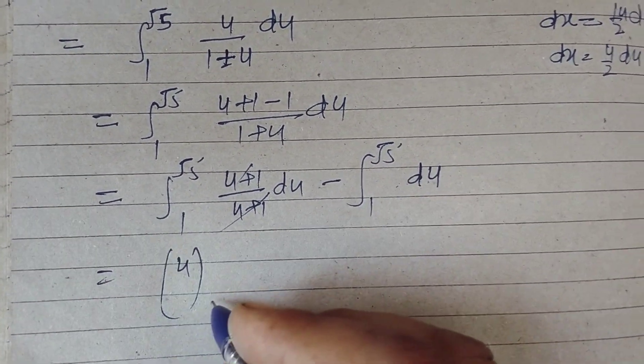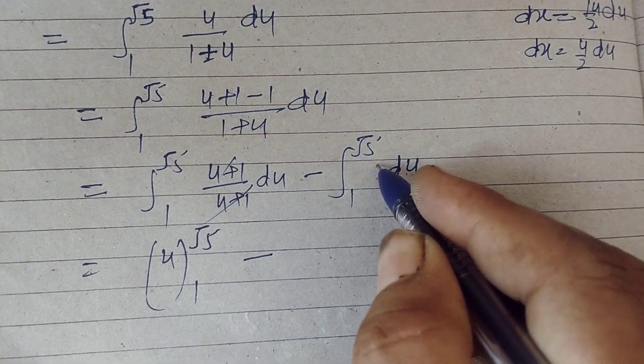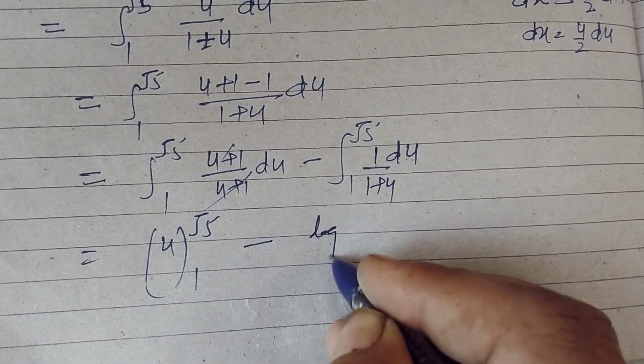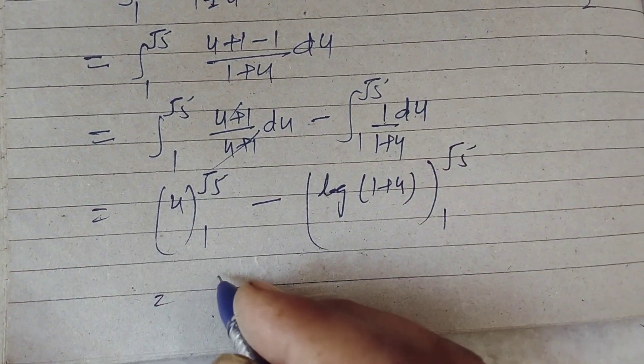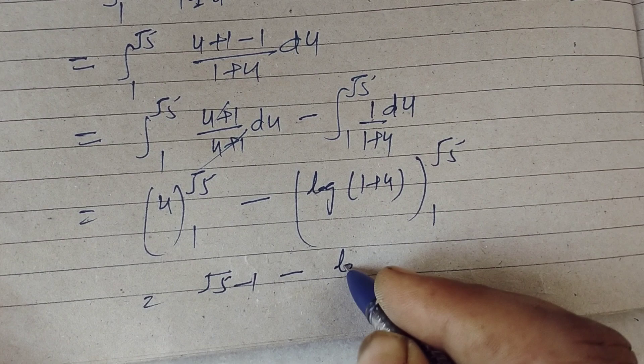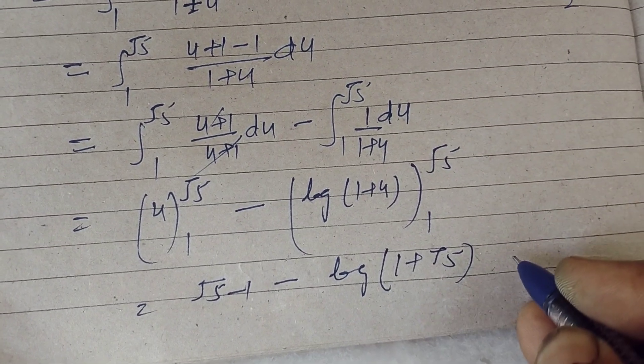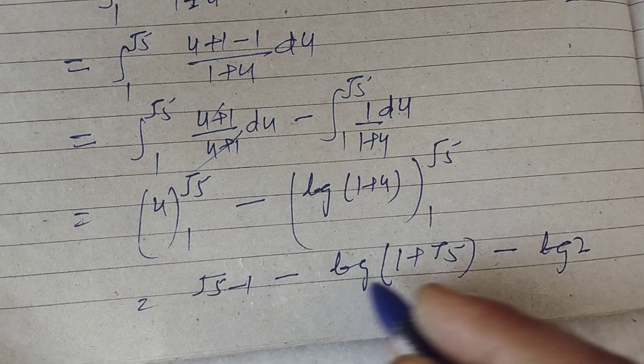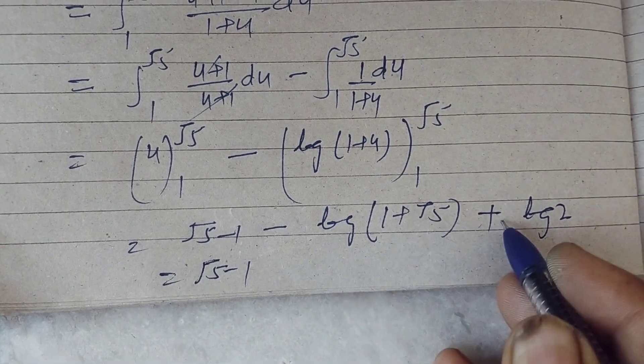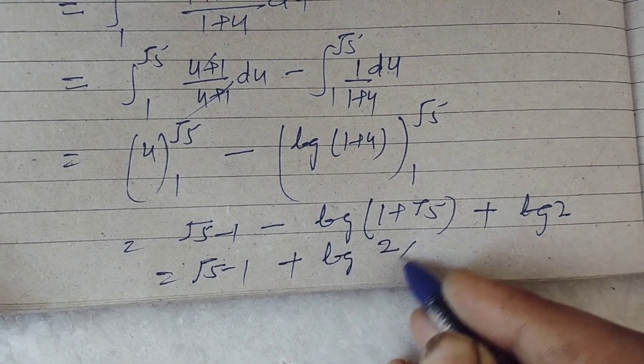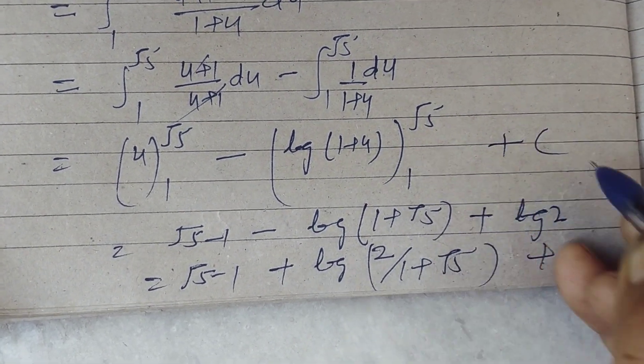And this is one to root five du minus natural log of one plus u from one to root five. So this is root five minus one minus ln of one plus root five minus ln two. So this becomes positive. Therefore root five minus one plus ln two upon one plus root five, plus c, where c is the constant of integration.